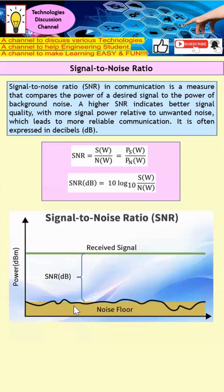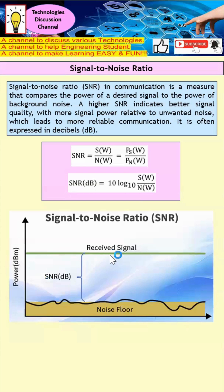Looking at this diagram, the receiver signal and the noise floor are shown. SNR is the separation between the receiver signal and the noise floor. A reasonable SNR means the two are far apart, and you can easily recover the original signal. With a low SNR, the receiver signal is very close to the noise floor, making it difficult to decode the message. Therefore, we want the SNR to be as high as possible.